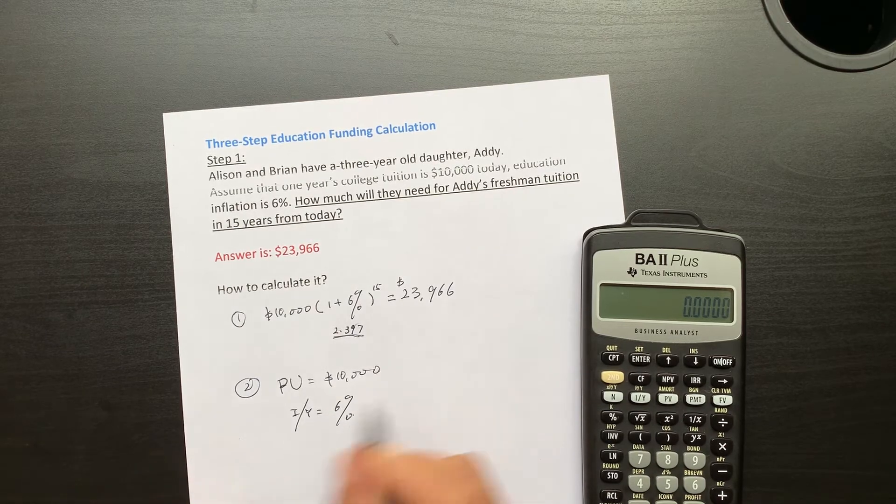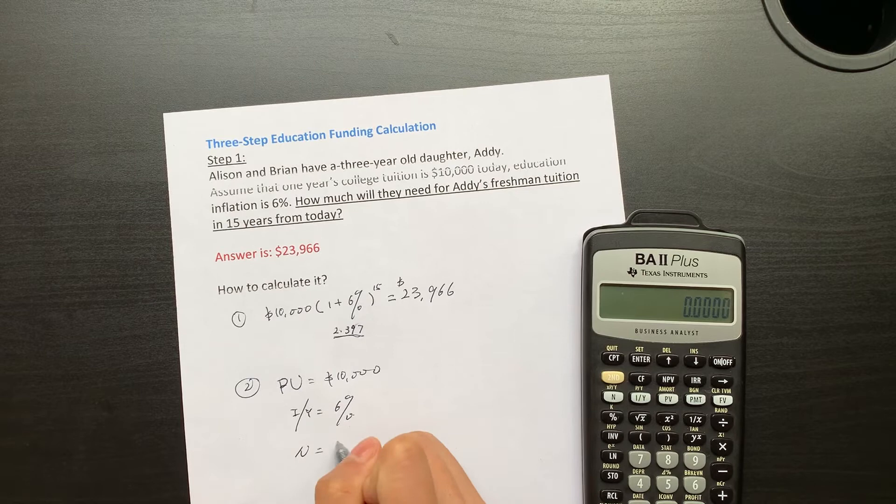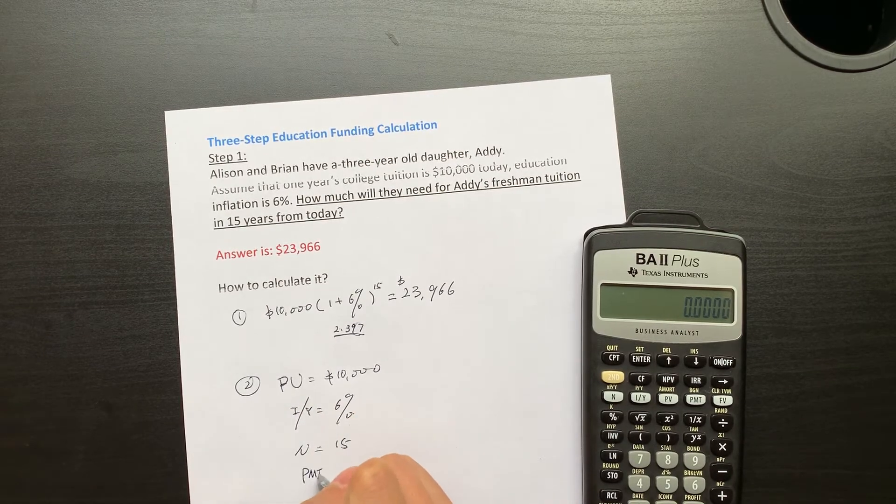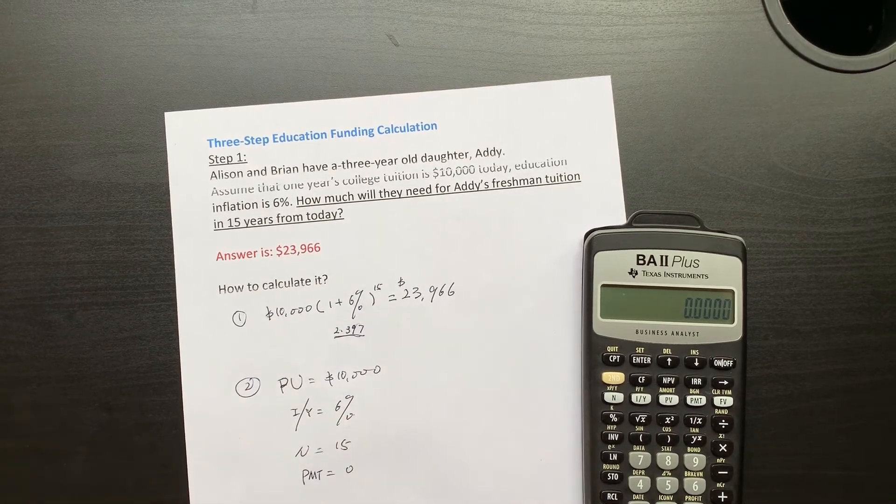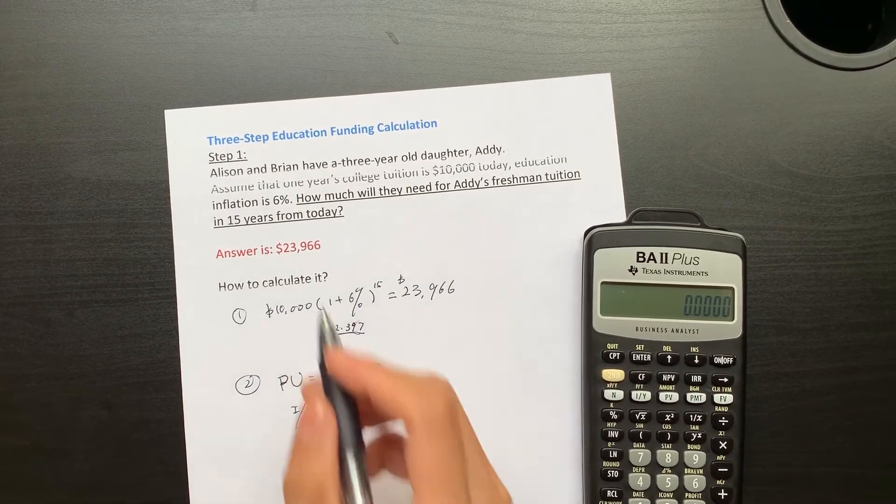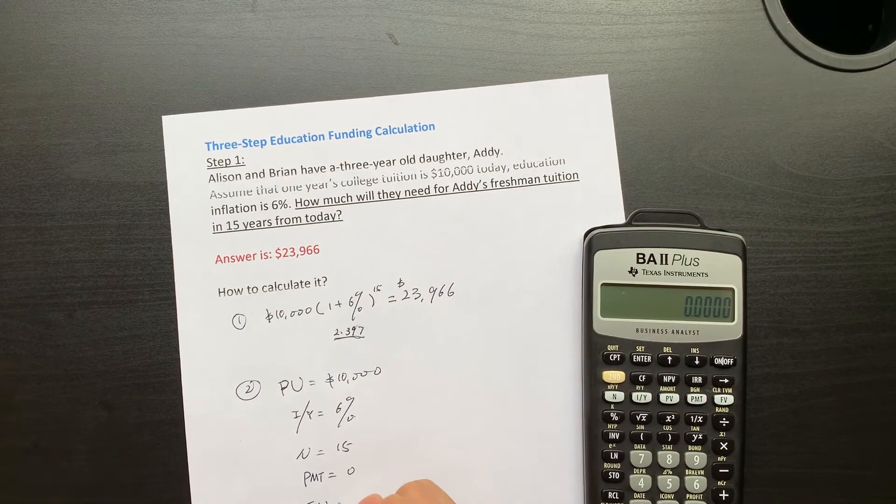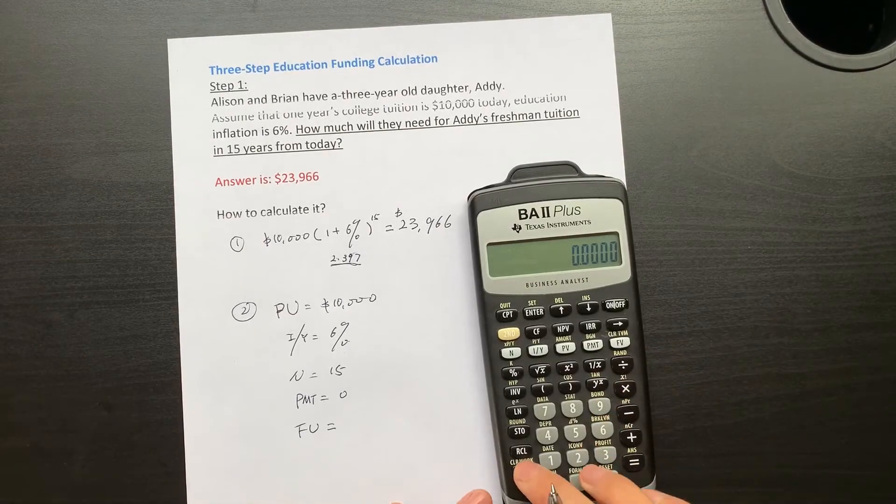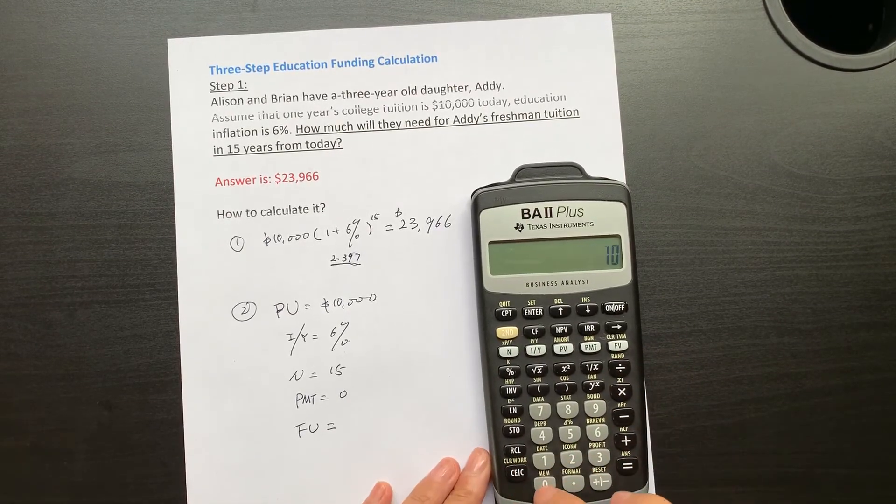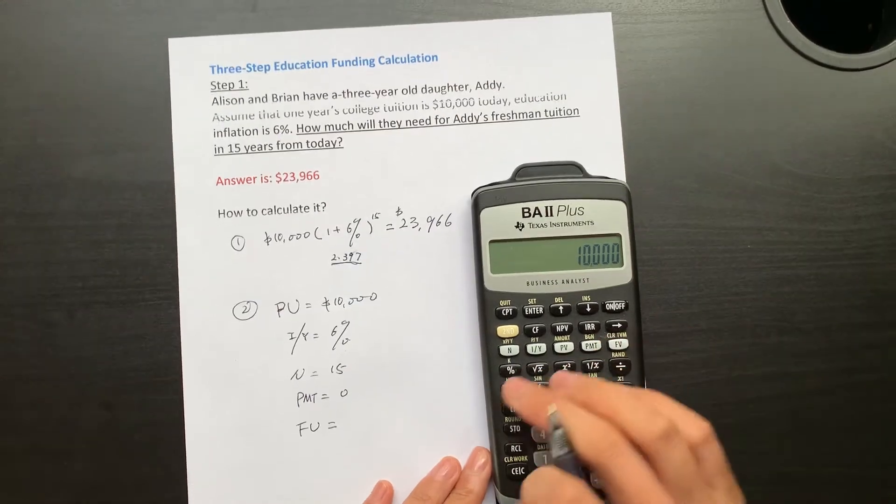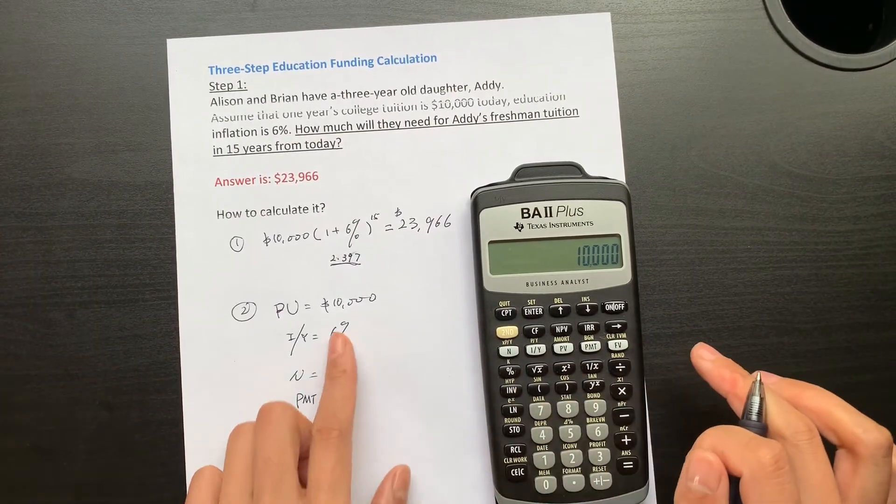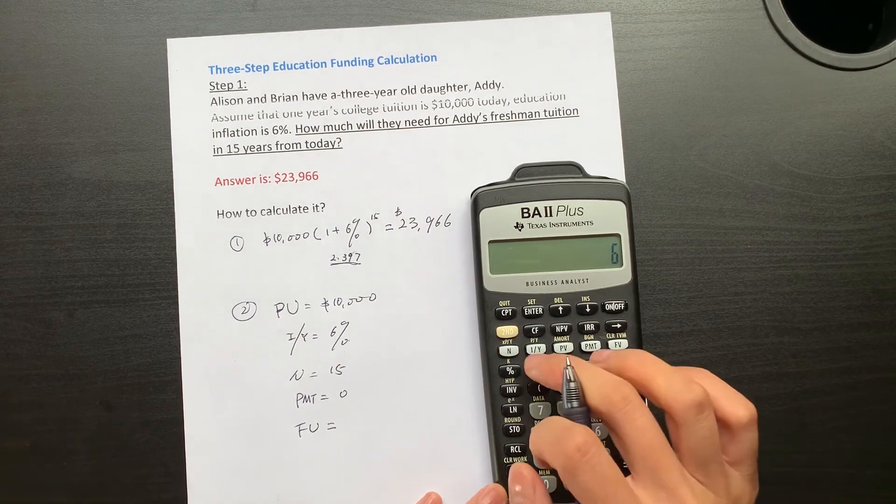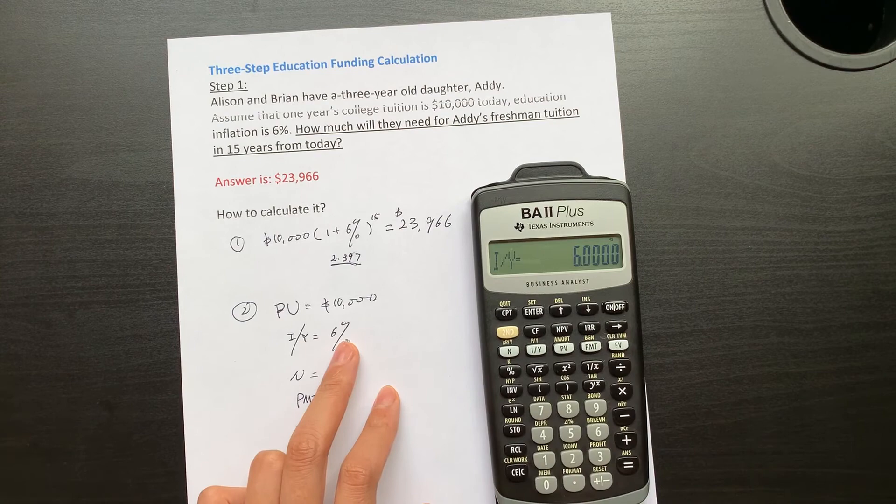The inflation rate is 6% per year. Total is 15 years. You want to find the future value. PMT equals zero because each year you don't put any money in. So present value is $10,000.